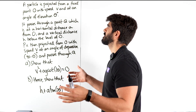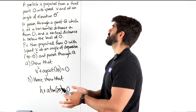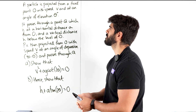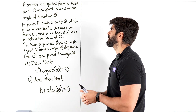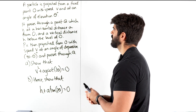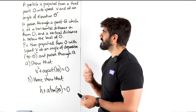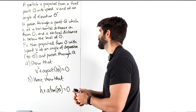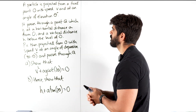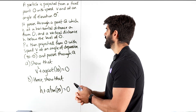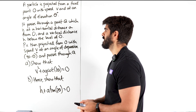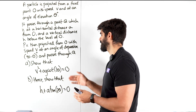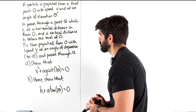It says: a particle is projected from a fixed point O with speed V and at an angle of elevation theta. It passes through a point Q, which is at a horizontal distance A from O and a vertical distance H below the level of O. P is then projected from O with speed V at an angle of depression 90 minus theta, and passes through Q again. Show that this is true, then hence show this is true.